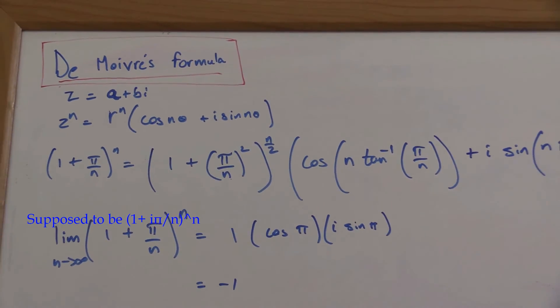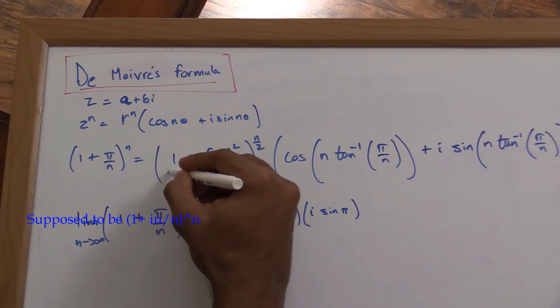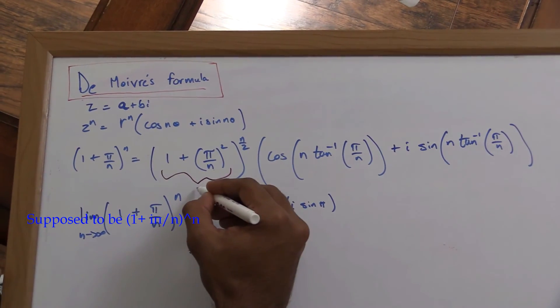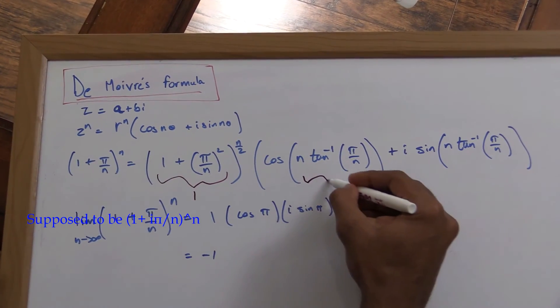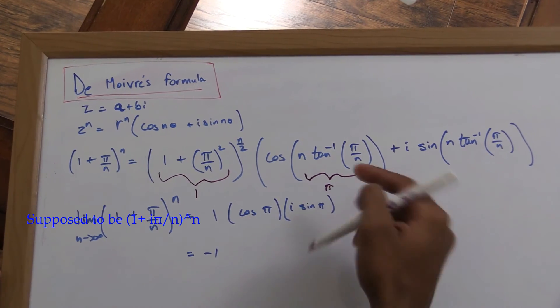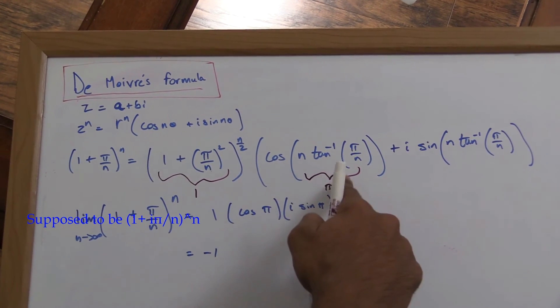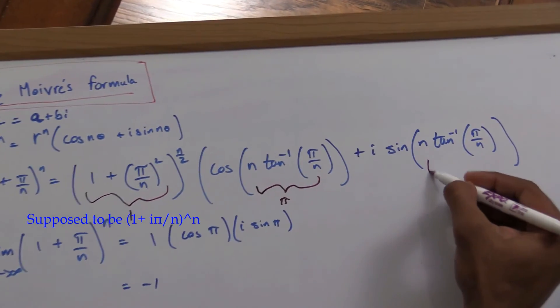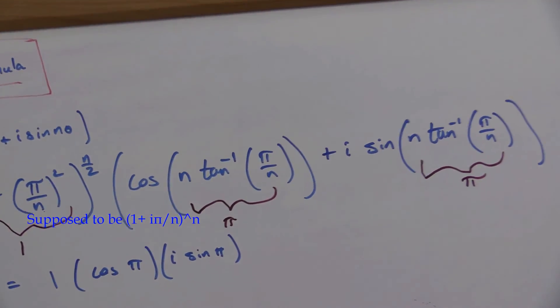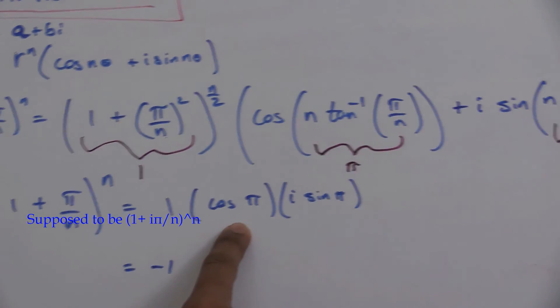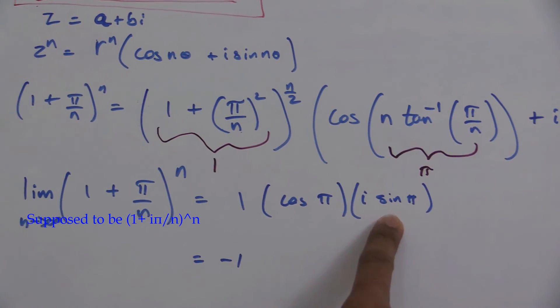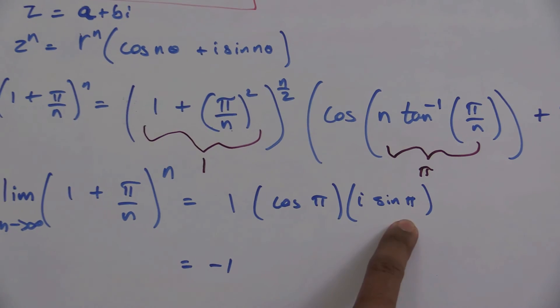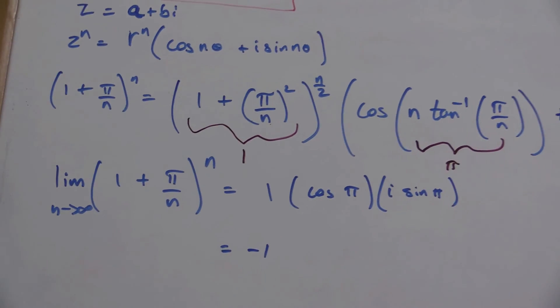For the sake of time, I won't prove this, but that goes to 1, this goes to π, which can be found using L'Hôpital's rule—if you plug in a really big number for n you get something really close to 3.14. So we're left with 1 times cosine of π plus i sine of π. Cosine of π is negative 1 and sine of π is 0.